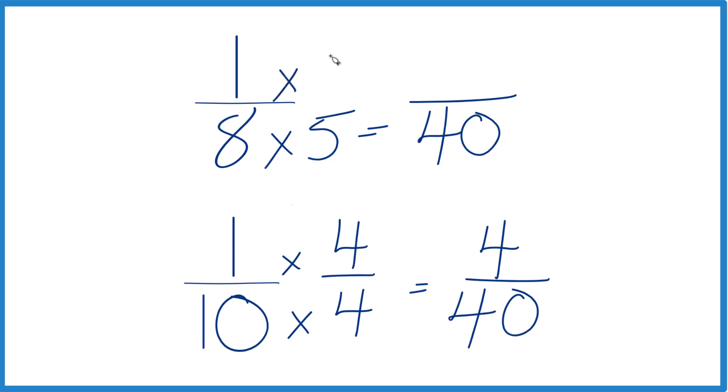Up here, 1 times 5, because 5 over 5 is 1, we get 5/40. So now 5 is greater than 4, so 5/40 is greater than 4/40. Only by 1/40, but it's still greater.